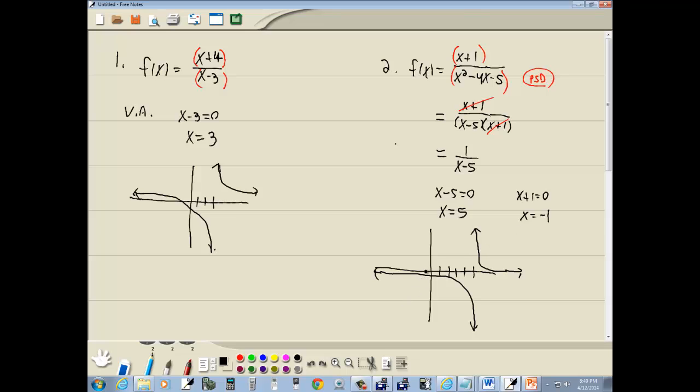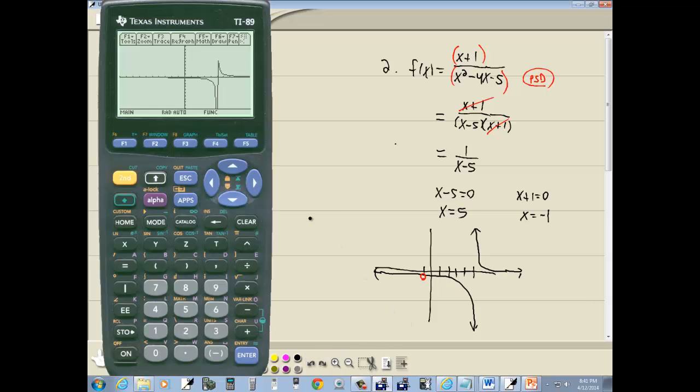Well what that means graph-wise is that at negative one, we have a hole in our graph, little open dot, little open circle. Now your graph on your calculator will not tell you that. You won't see an open dot, open circle here. But it should be there anyway. If it stays in the problem, it's a vertical asymptote. If it gets canceled away from the denominator, then it's a hole.